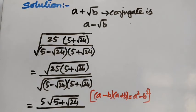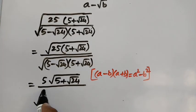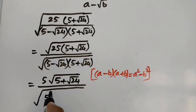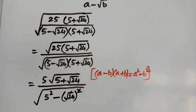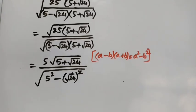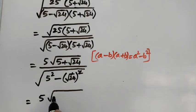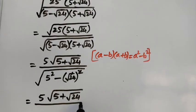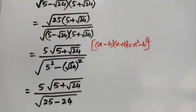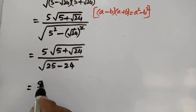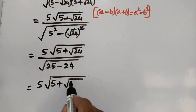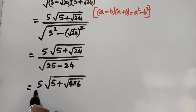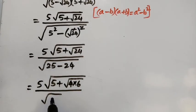Using the algebraic identity, the denominator becomes 5 squared minus root 24 squared, which equals 25 minus 24, which equals 1. So the denominator simplifies to 1.